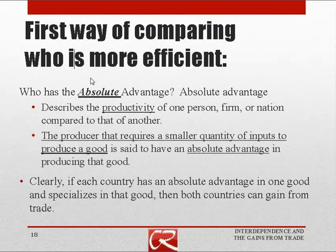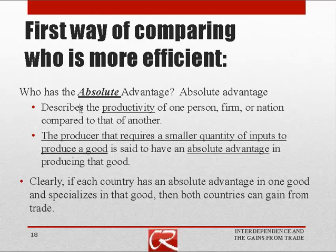The first way of comparing who is more efficient uses the labor cost per unit of output, or output per hour. This relates to the idea of absolute advantage. Absolute advantage is determined by comparing the productivity of one person or nation compared to another — whoever requires less input to produce a unit of output, or whoever has more output per unit of input, has the absolute advantage in producing that good.